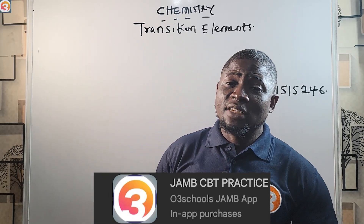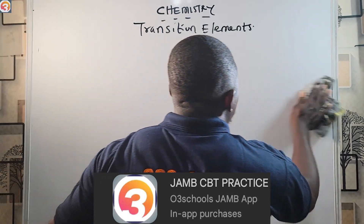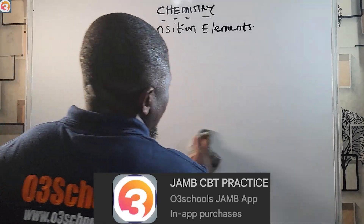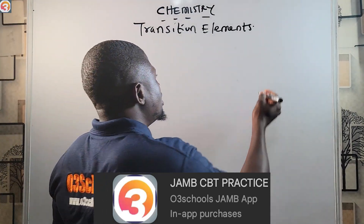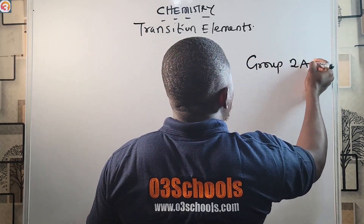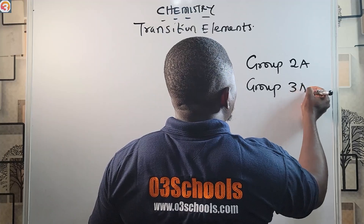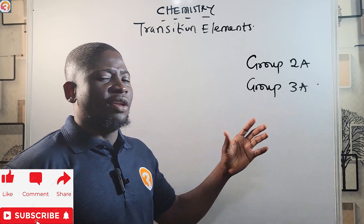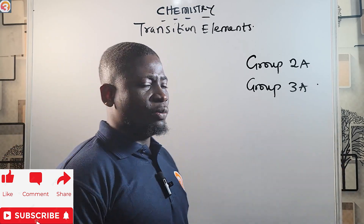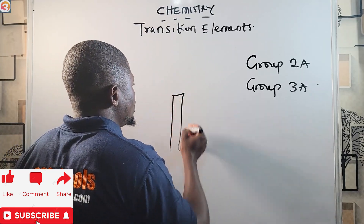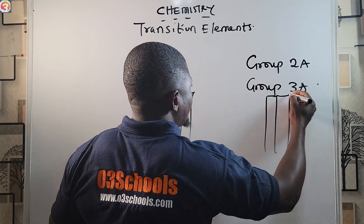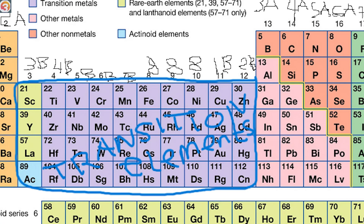Now let's go back to why we are here today: the transition elements. The transition elements are those elements that occupy the interval between group 2A and group 3A of the periodic table. They are sandwiched between these two groups — in between here we have the transition elements.